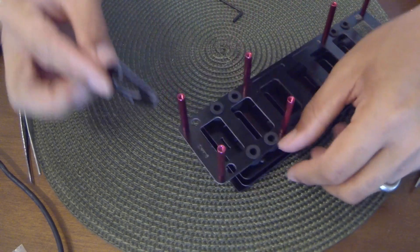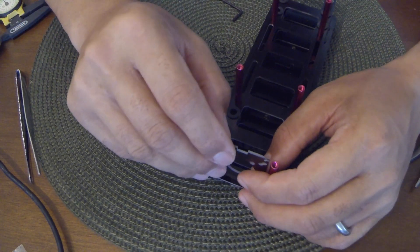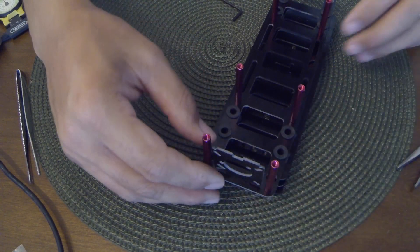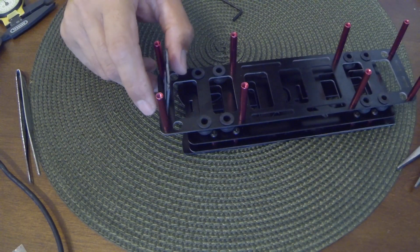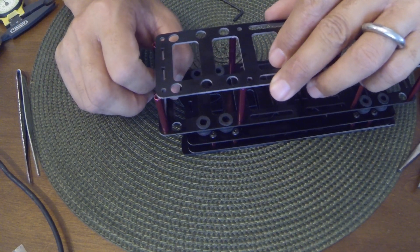So next up, you can flip the frame over and you can drop in the camera plate. Again, if this was a full build of electronics, I would install your board cam first onto the camera plate.